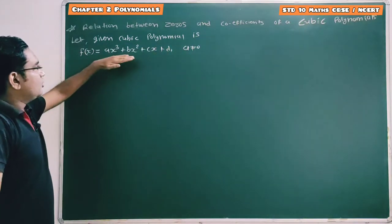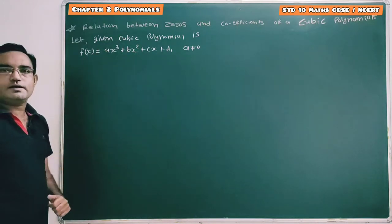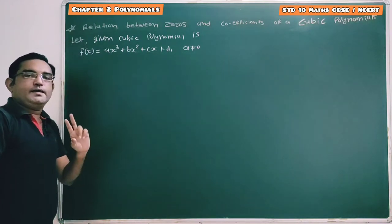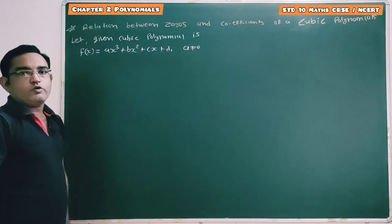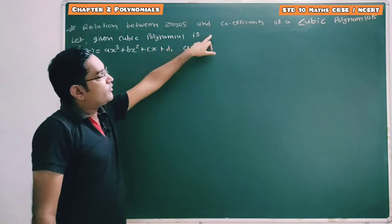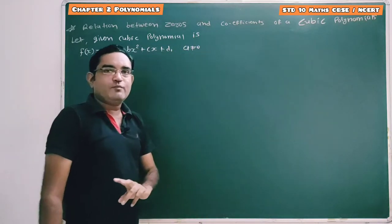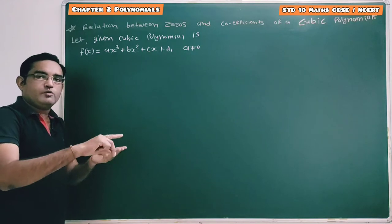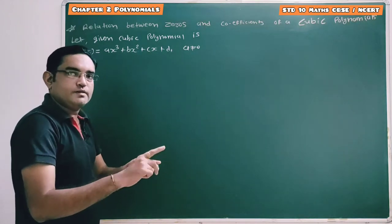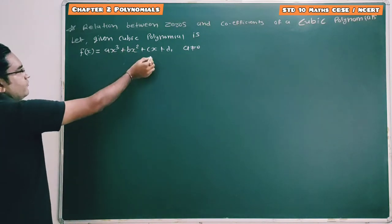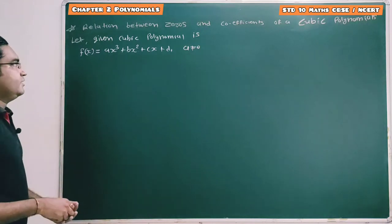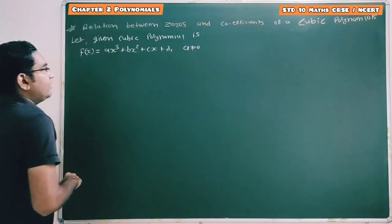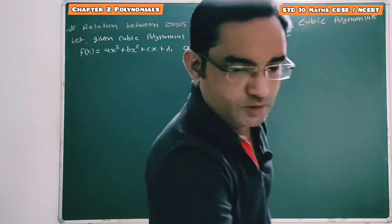In a cubic polynomial, there are maximum 4 terms — that means total terms are always degree plus 1. For a quadratic polynomial, degree is 2, so total 3 terms are there. Here, for cubic polynomial, total 4 terms and total 4 coefficients are there. The total number of zeros equals the degree, so here there are 3 zeros: alpha, beta, and gamma.